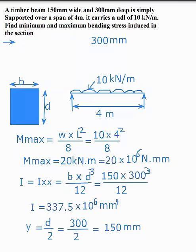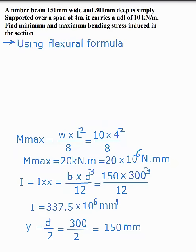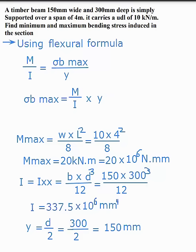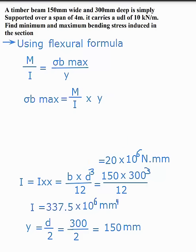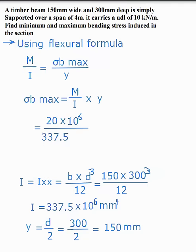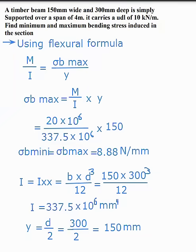Using the general bending formula M/I equals sigma B max divided by y, rearranging gives sigma B max equals M divided by I, multiplied by y. Substituting: M is 20 kN·m, which is 20 × 10⁶ N·mm, divided by I of 337.5 × 10⁶, multiplied by y of 150 mm. This gives sigma B max equal to 8.88 N/mm².